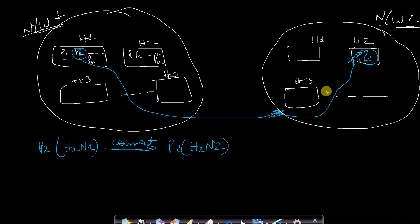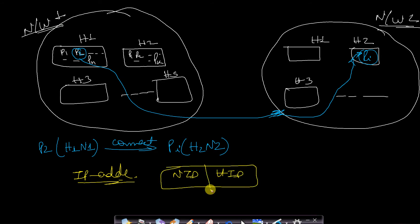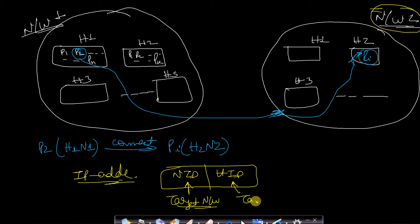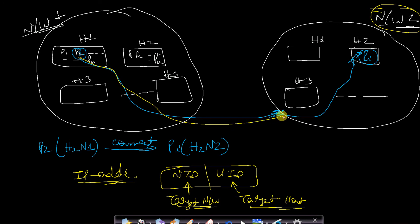This problem is resolved using the IP address. An IP address has two parts: the network ID part and the host ID part. The network ID identifies the target network — in this case, Network 2. The host ID identifies the target host within that network — in this case, Host 2. So by using the network ID we can reach Network 2, and by using the host ID we can differentiate Host 2 within that network.